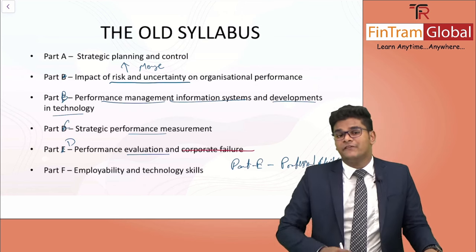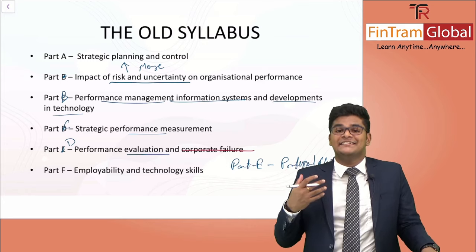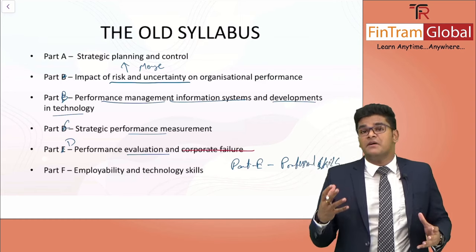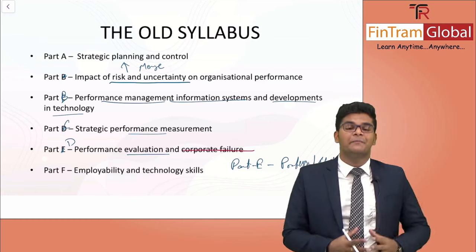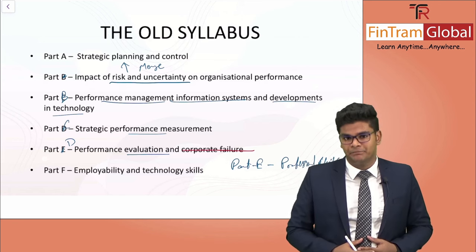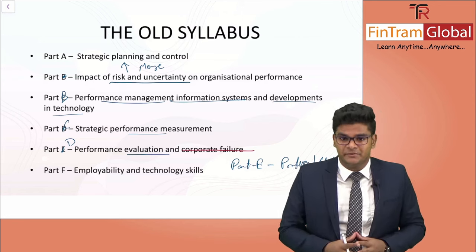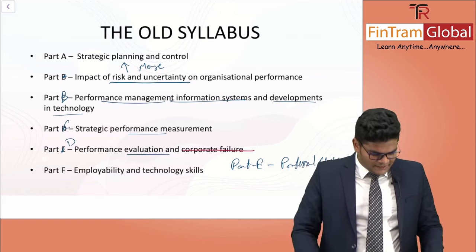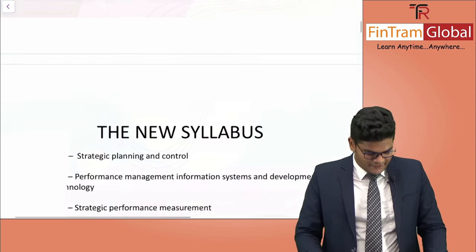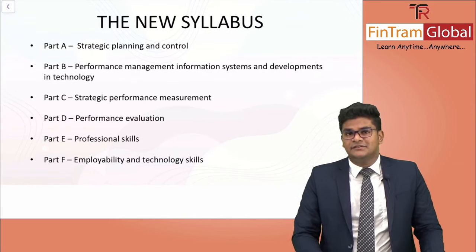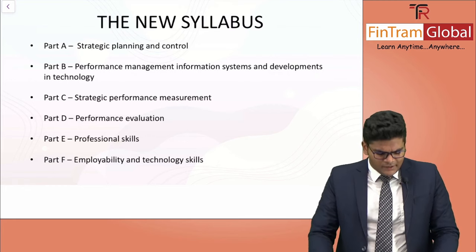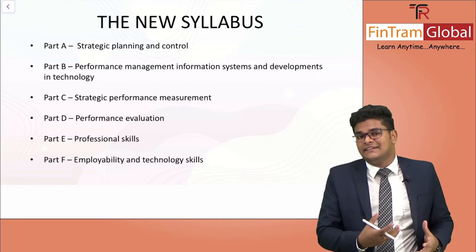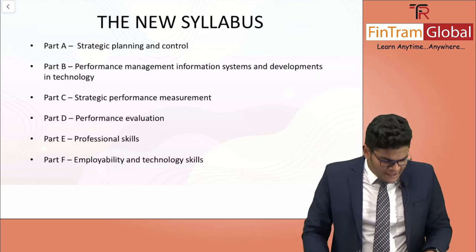The APM exam used to have four professional marks available within Section A. But now we have 20 marks available as professional marks for your upcoming APM exam, and it's applicable for all optional papers as well. We will speak more about this particular set of professional skills. But before that, let's take a look at the new syllabus areas once again. We have Part A — Strategic Planning and Control — where we have a few additions to the syllabus, and the existing syllabus content is still relevant.